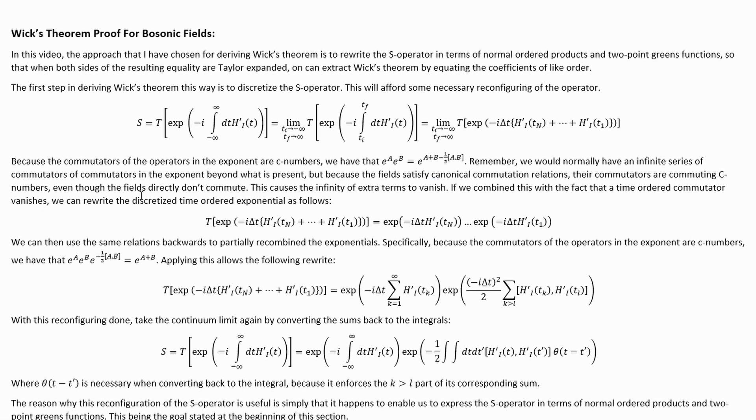Because the commutators of the operators in the exponent are C numbers, we have this relation. Remember, we would normally have an infinite series of commutators of commutators in the exponent beyond what is present right there, but because the fields satisfy canonical commutation relations, their commutators are commuting C numbers, even though the fields don't directly commute themselves. This causes the infinity of extra terms to vanish. If we combine this with the fact that a time-ordered commutator vanishes, we can rewrite the discretized time-ordered exponential like this.